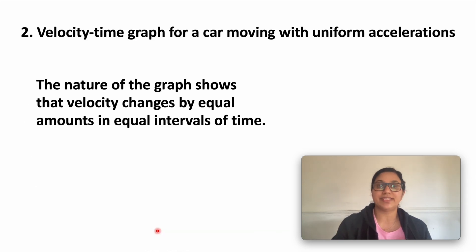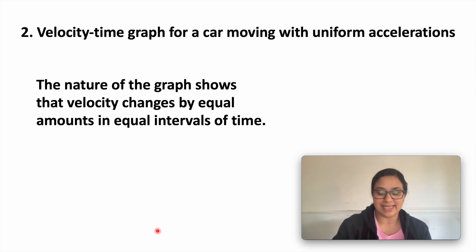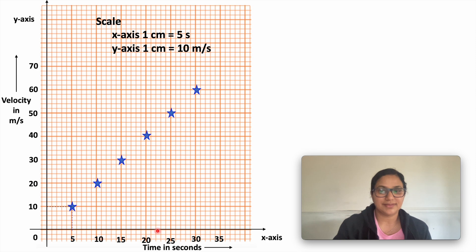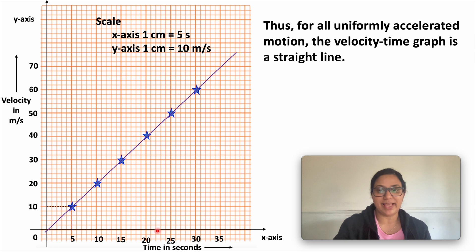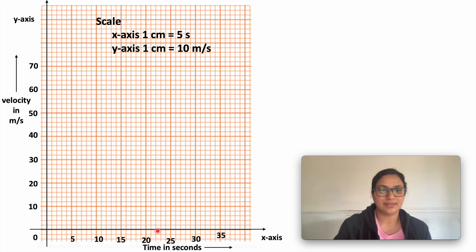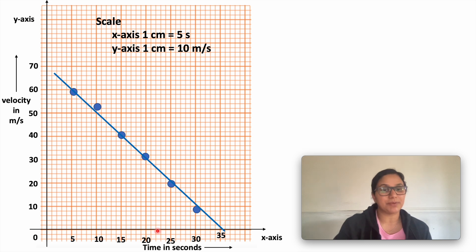Second case: velocity-time graph for a car moving with uniform acceleration. What do we mean by uniform acceleration? That means velocity changes by equal amounts in equal intervals of time. The nature of the graph will be a straight line passing through the origin. For all uniformly accelerated motion, the velocity-time graph is a straight line. If velocity decreases with respect to time, the graph slopes downward.